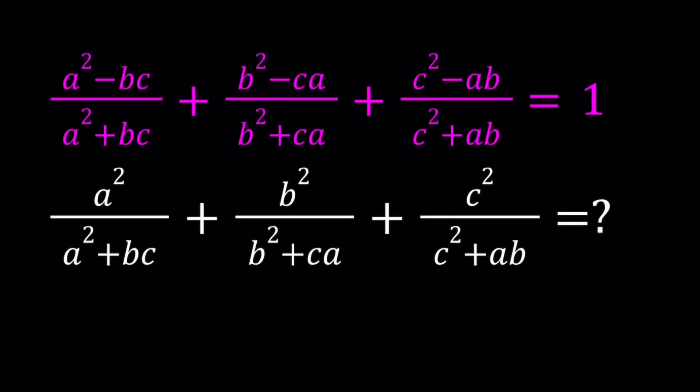Hello everyone. In this video we're going to be evaluating an algebraic expression based on another one. We're given an expression that is equal to 1, and then we're supposed to evaluate the bottom expression, which is a squared over a squared plus bc, plus b squared over b squared plus ca, plus c squared over c squared plus ab. I know these expressions look confusing but don't worry, we're going to go through this.